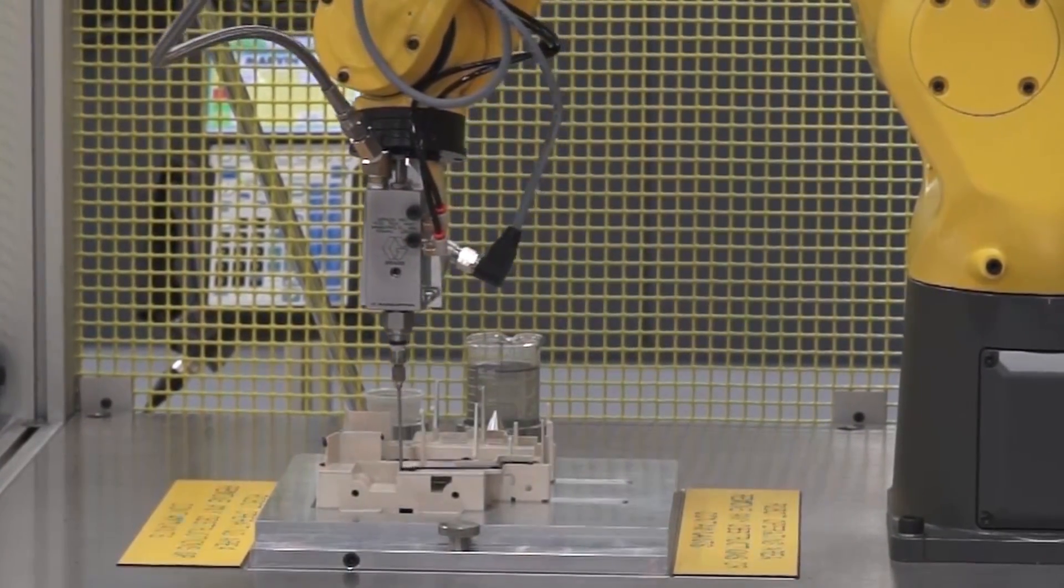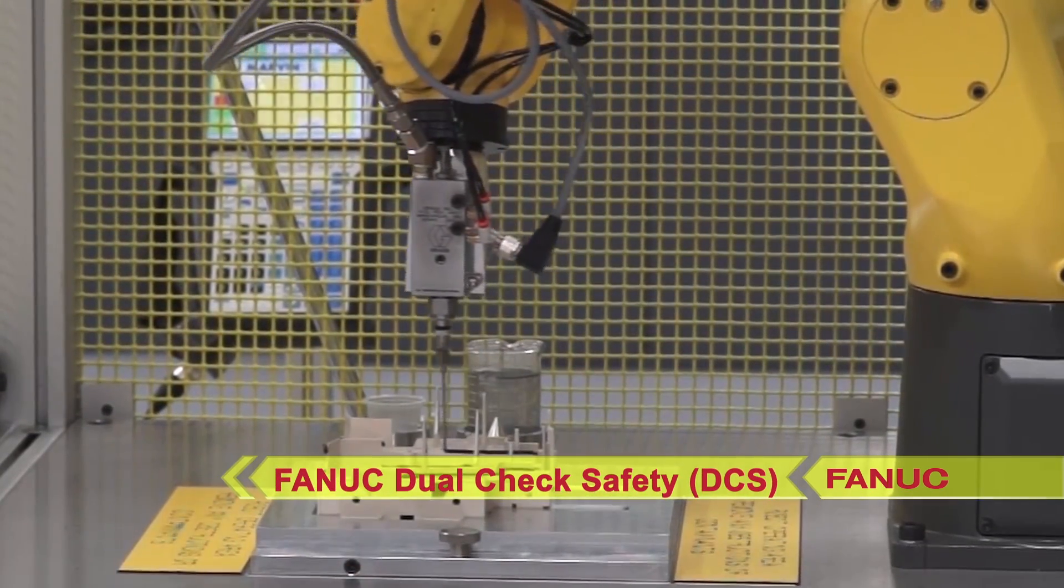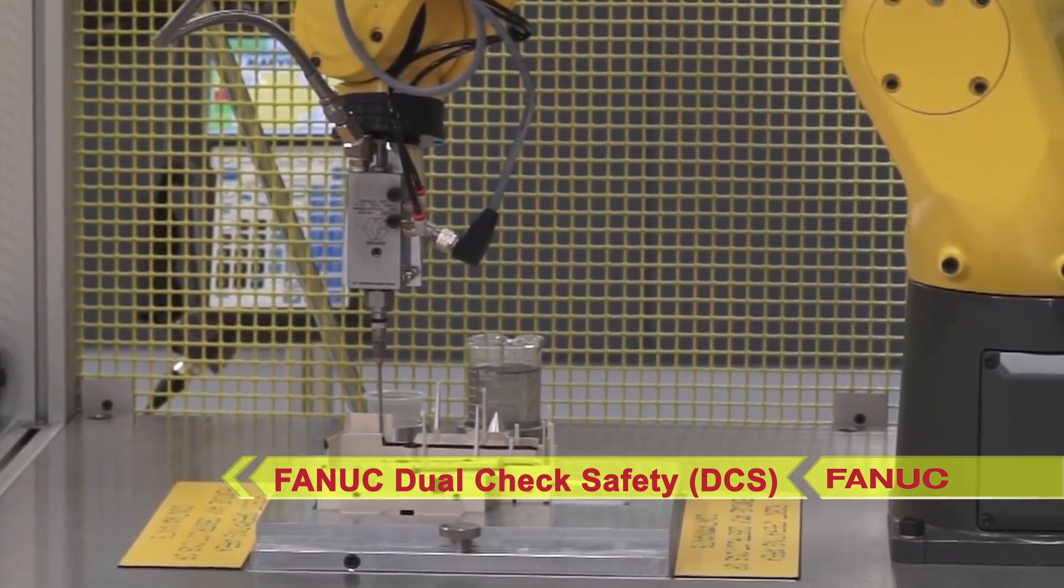The system utilizes Fanuc's dual check safety software in two position check zones, providing safety rated speed and position monitoring on the robot.